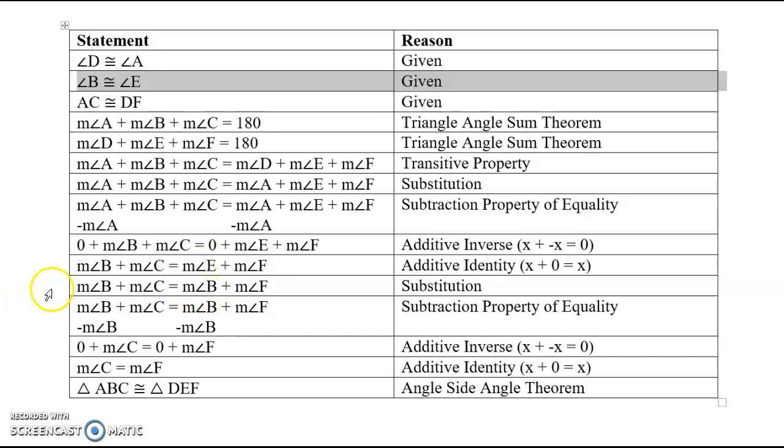And then, same thing, doing that then allows us to use our subtraction properties in order to get rid of angle B, which gets us one step closer. Now we have angle C is congruent to angle F, or the measure of angle C equals the measure of angle F. You can write it either way.